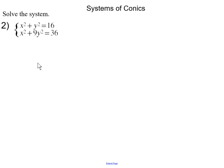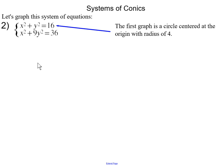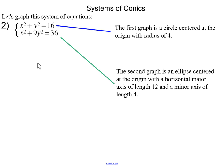Moving on to the next problem — again, I encourage you to pause the video and work it out yourself. We have x squared plus y squared equals 16, and x squared plus 9y squared equals 36. The first equation is a circle centered at the origin with a radius of 4. The second equation is an ellipse centered at the origin with a horizontal major axis of length 12 and a minor axis of length 4.